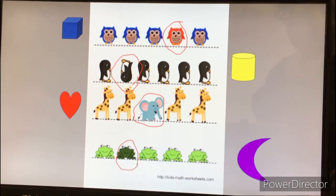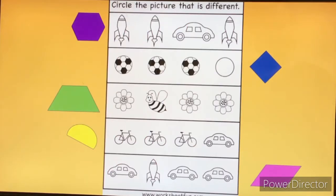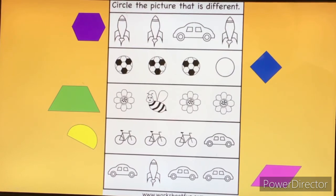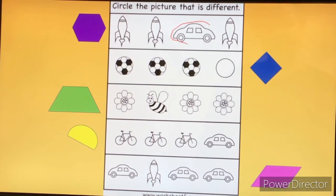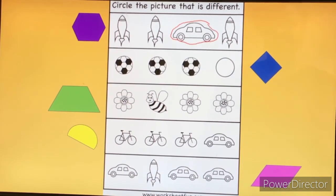Okay, let's try one more. Let's move on to the purple octagon. Which one of these pictures is different? Did you find the car? It's not the same as a rocket ship.